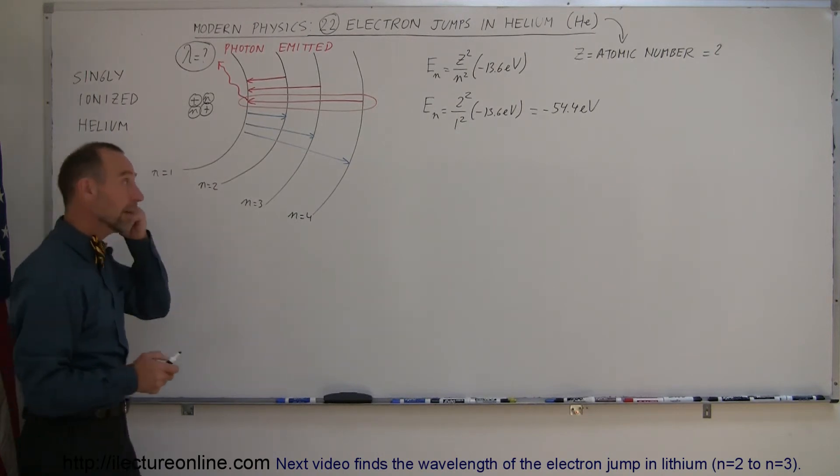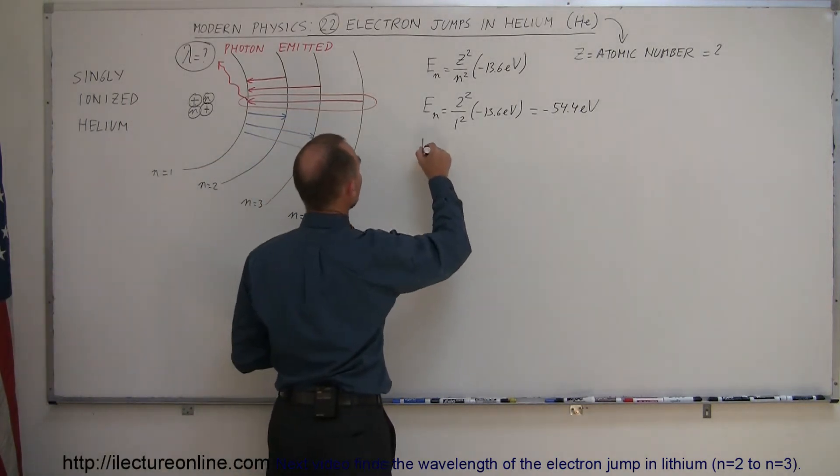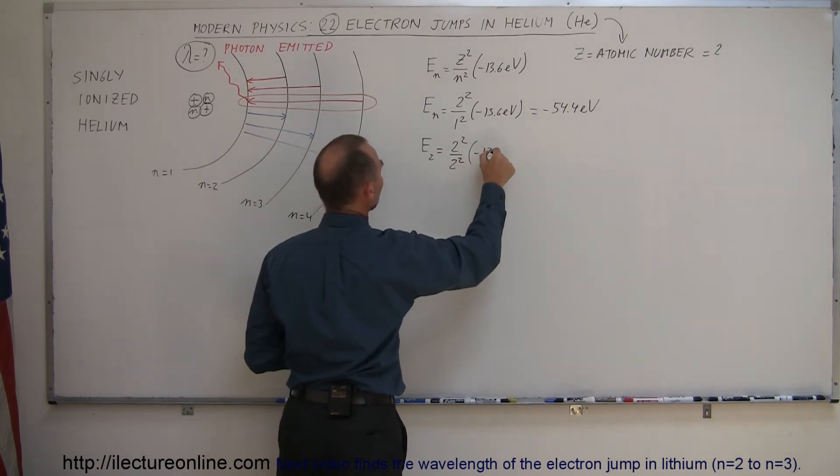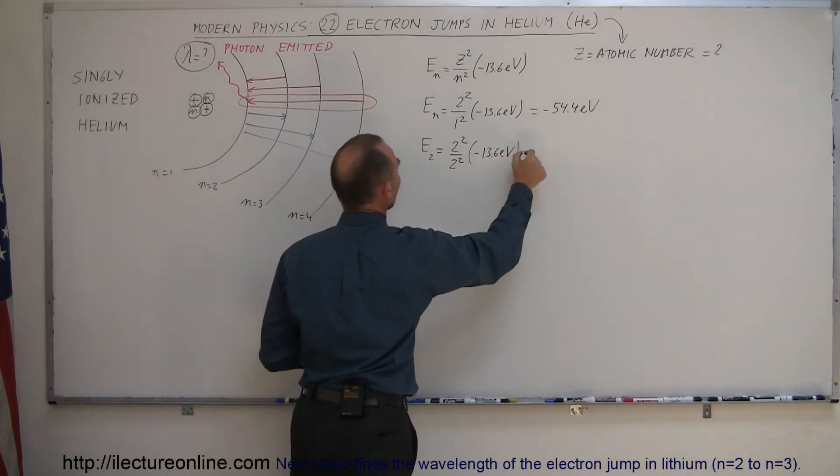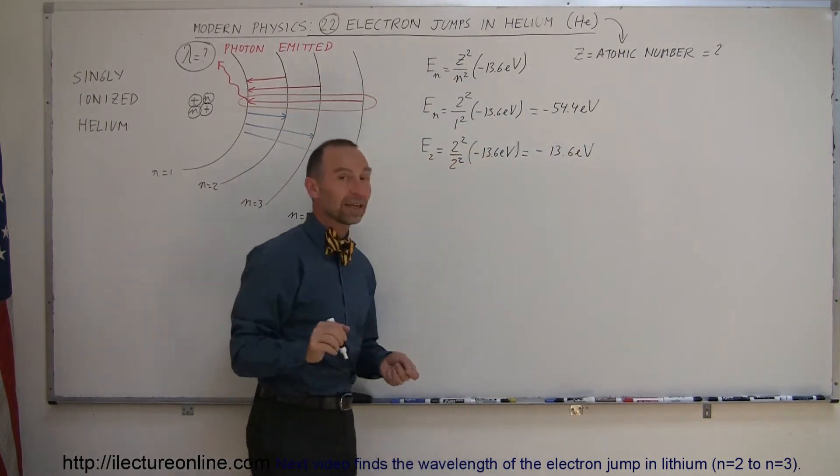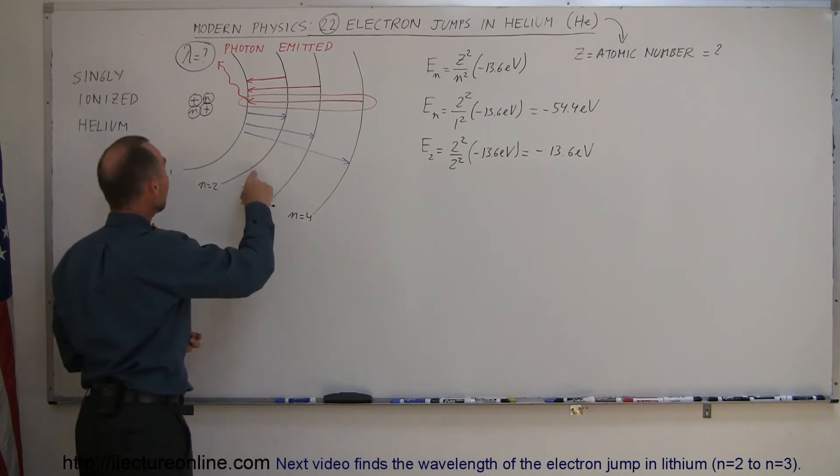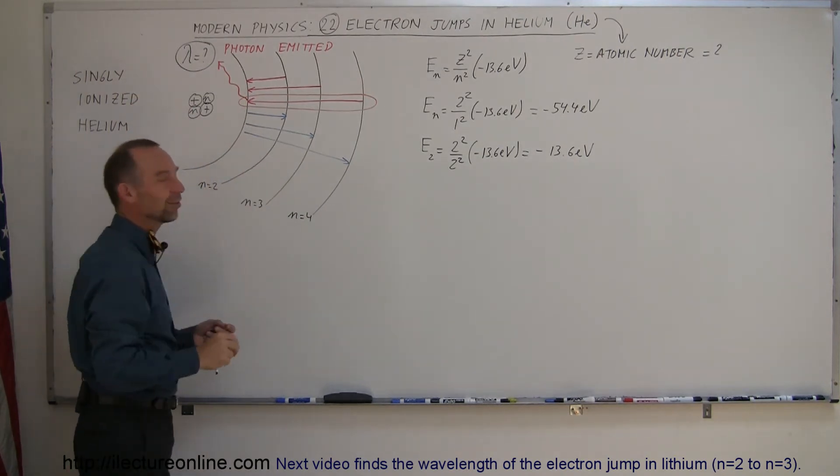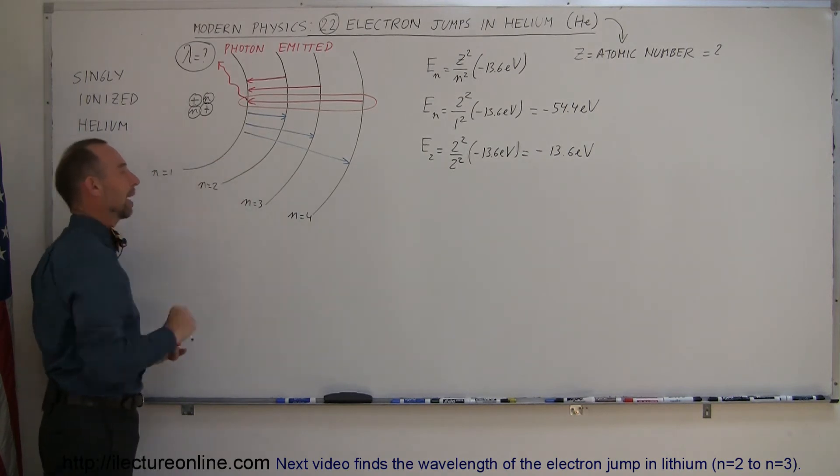So continuing on, how do we find the second level? Energy in the second orbit is equal to, that would be 2-squared divided by 2-squared times minus 13.6 electron volts. And so that would be exactly minus 13.6 electron volts, which is kind of interesting. The energy level of helium, singly ionized helium, of the second orbit is the same as the first orbit for hydrogen.